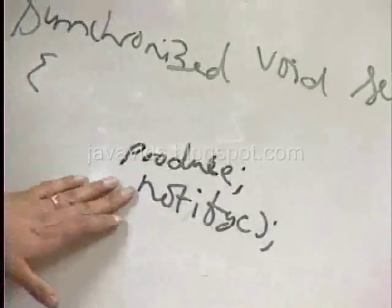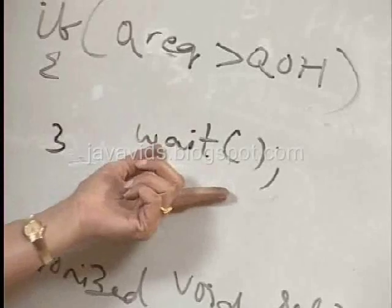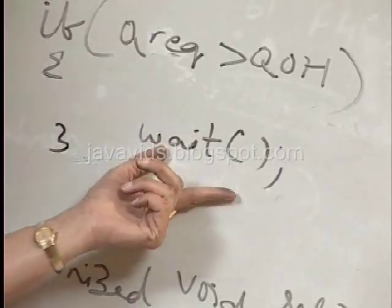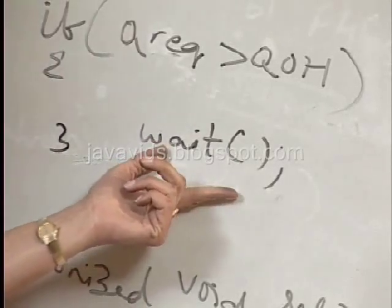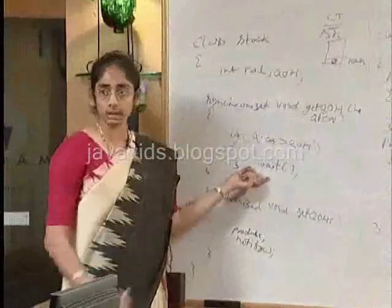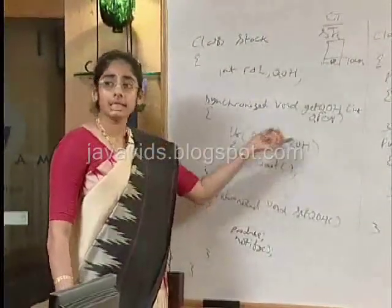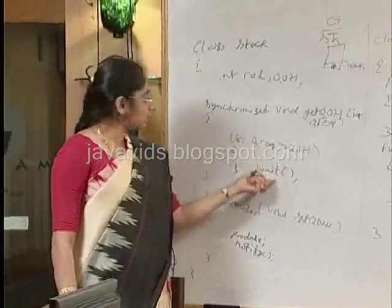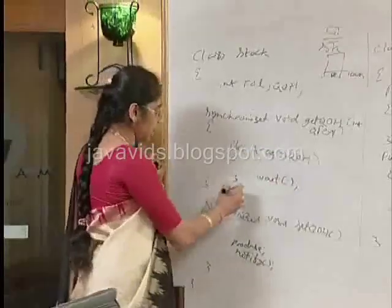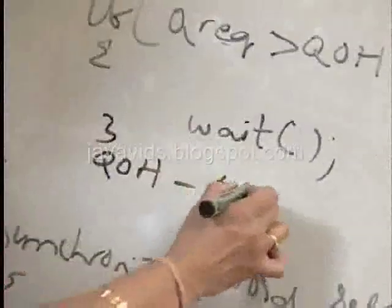When it calls notify, it wakes up the thread which has gone to a wait state — that is the consumer thread. Once the producer releases the lock and comes out, the consumer thread which was in the waiting pool is brought back into a running state via notify, and gets the lock again to get the quantity on hand — that is, quantity on hand minus quantity required.